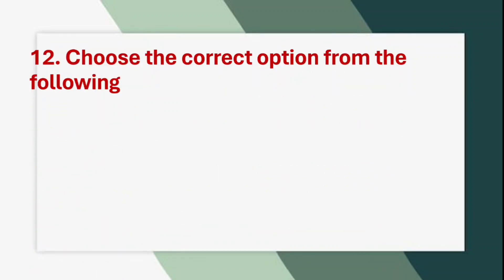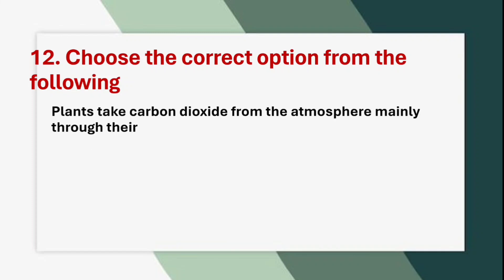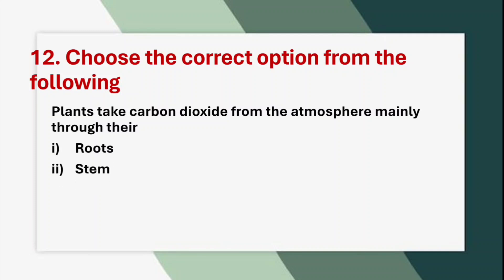Twelfth question — Choose the correct option: Plants take carbon dioxide from the atmosphere mainly through their: Option 1: Roots. Option 2: Stem. Option 3: Flowers. Option 4: Leaves. The correct answer is option 4: Leaves.